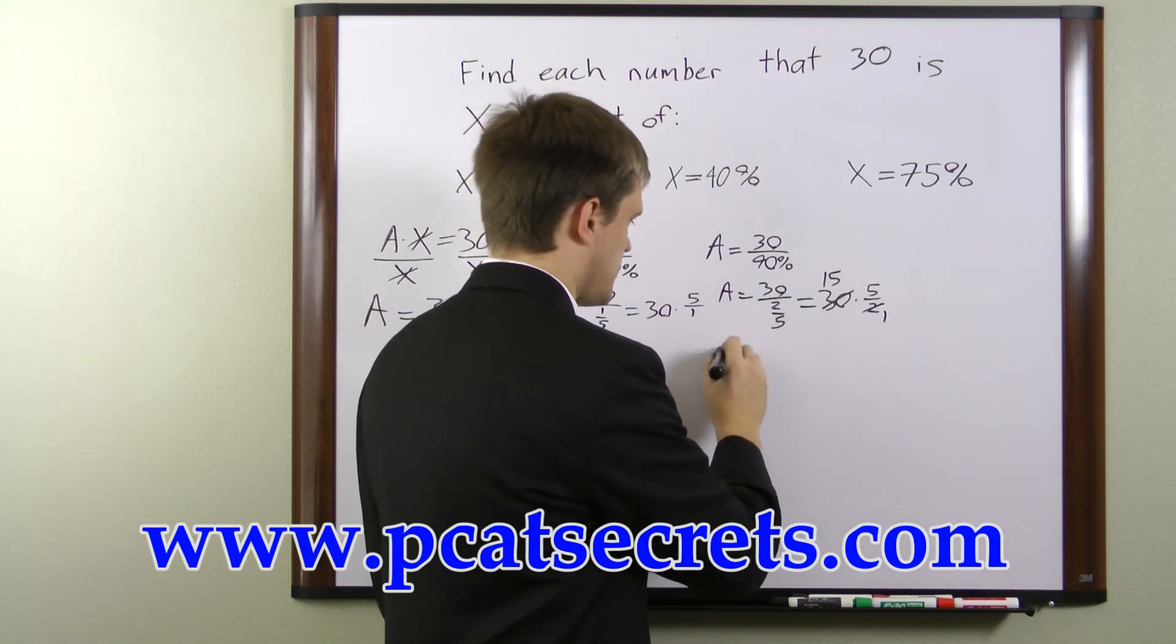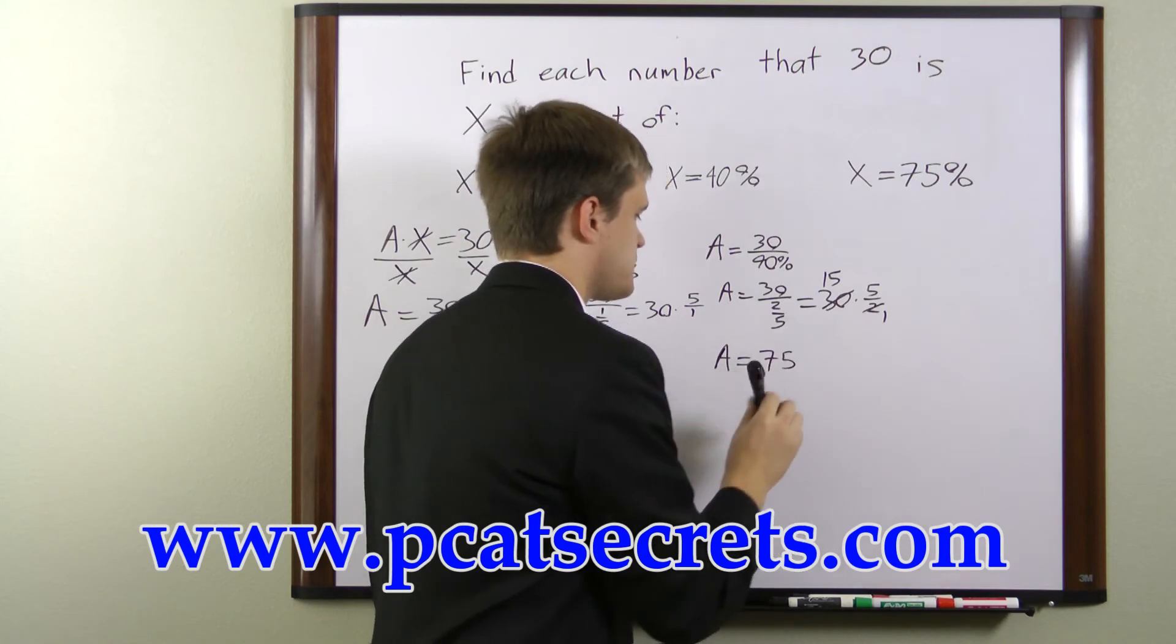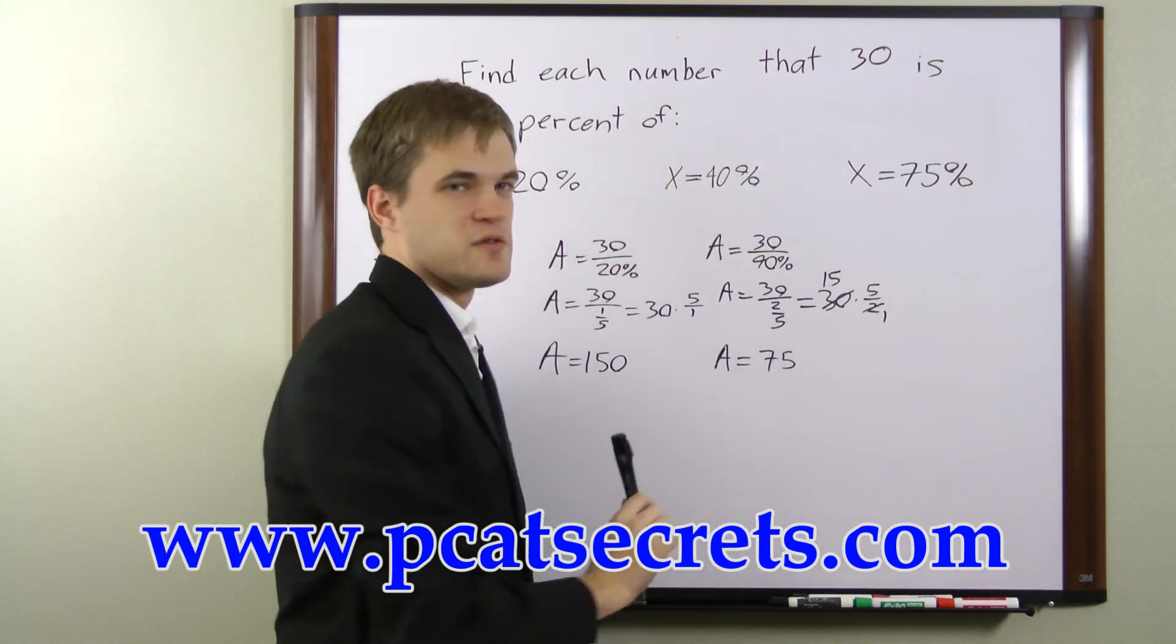So we can multiply this out. 15 times 5 is 75. So 30 is 40 percent of 75.